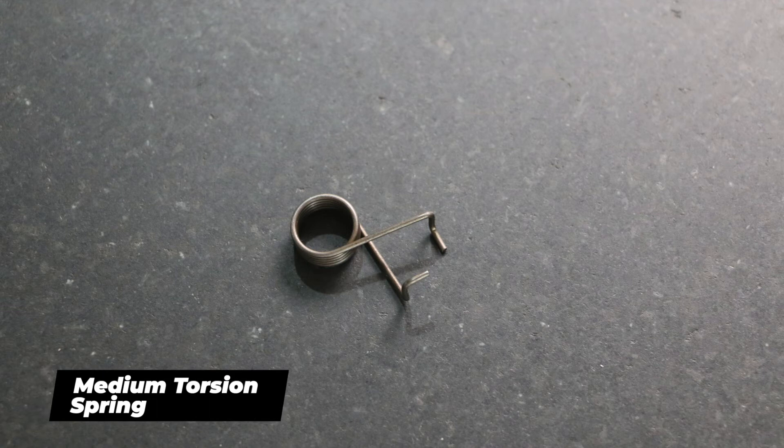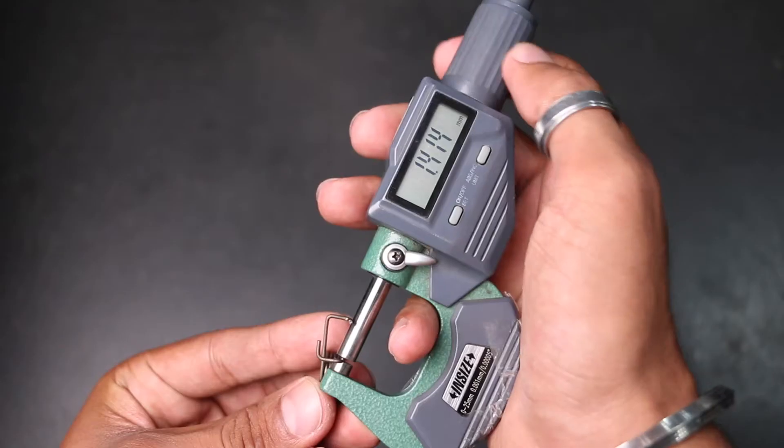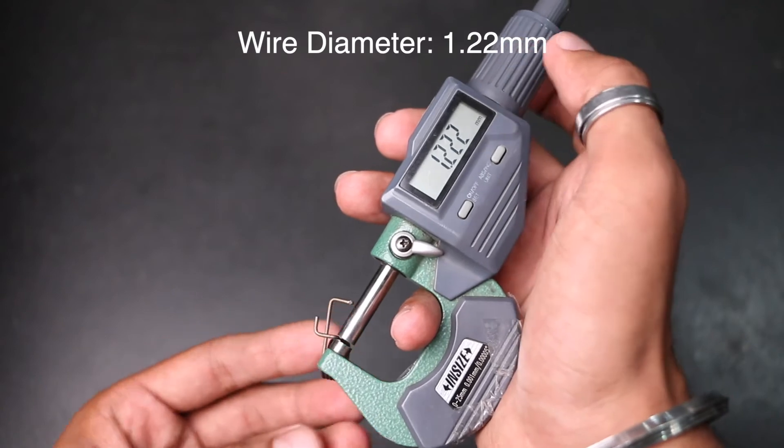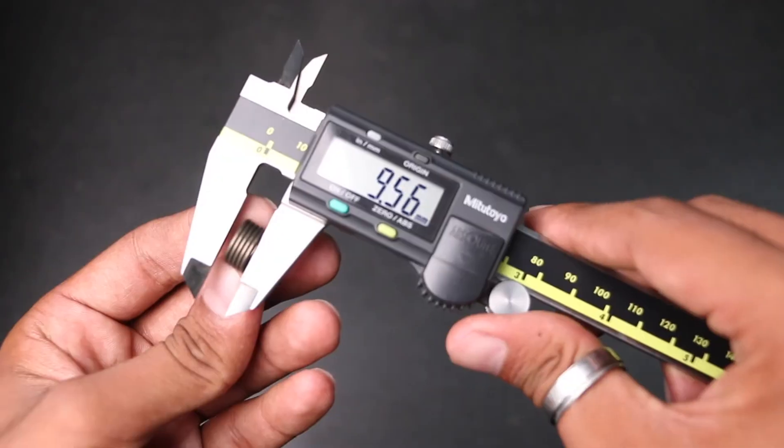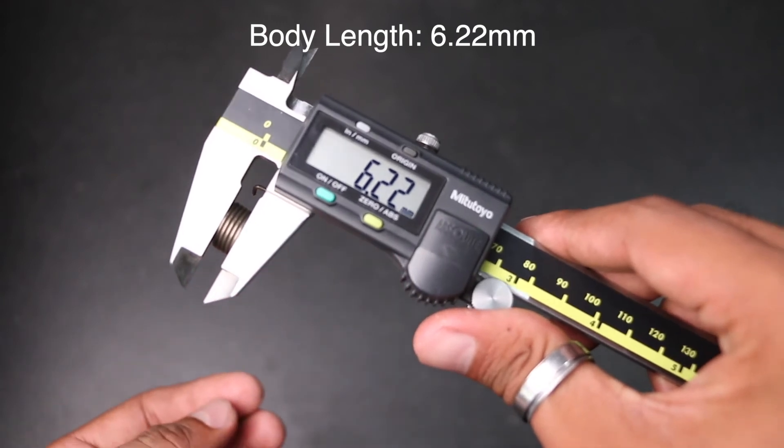Next is medium torsion spring. In case of medium torsion spring, the wire diameter is 1.22 millimeters. OD is 13.39 millimeters. Body length is 6.22 millimeters.